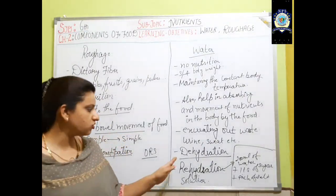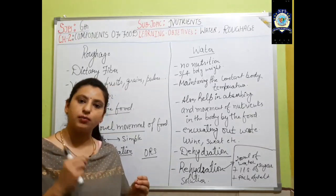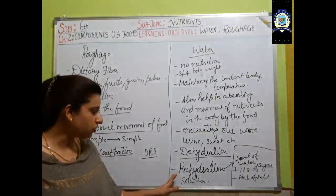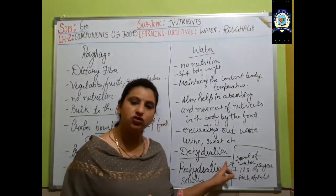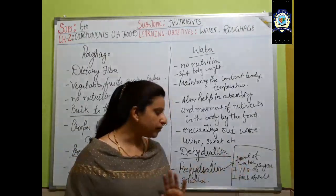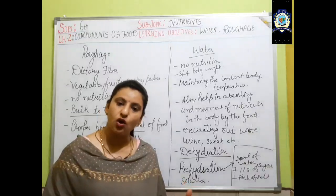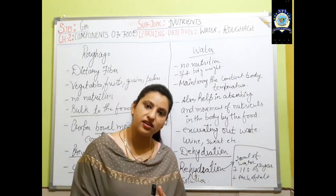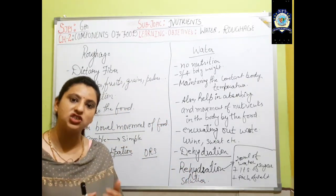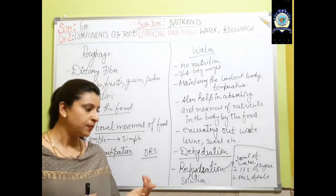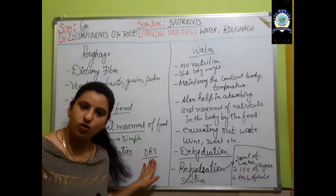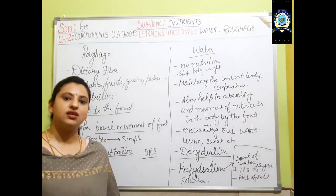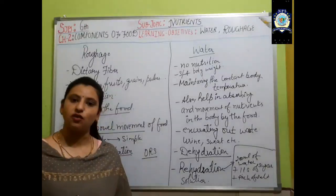If loss of water takes place from the body, it is called dehydration. We can rehydrate by drinking large amounts of water and also by using a rehydration solution: 200 ml of water with 1 tablespoon of sugar and a pinch of salt — this electrolytic solution helps rehydrate the body, especially in summers and rainy seasons. This is ORS — Oral Rehydration Solution — recommended by doctors to improve rehydration levels.